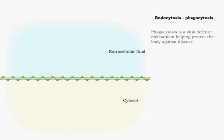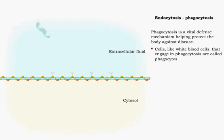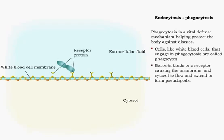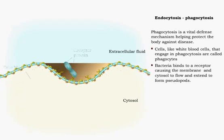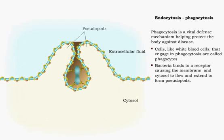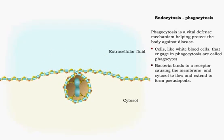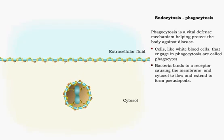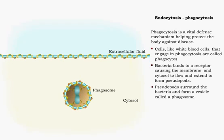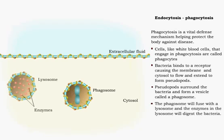Phagocytosis is a common form of endocytosis and part of a vital defense system protecting the body from disease. Large particles, like bacteria, bind to a receptor causing the membrane to extend to form pseudopods, which then surround the bacteria, forming a vesicle called a phagosome. The phagosome will fuse with a lysosome, and the enzymes in the lysosome will digest the bacteria.